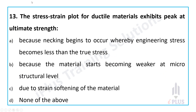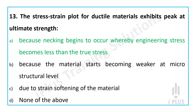The stress-strain plot for ductile materials exhibits a peak at ultimate strength because necking begins to occur, whereby engineering stress becomes less than true stress, as the material starts becoming weaker at the microstructure level due to strain softening.